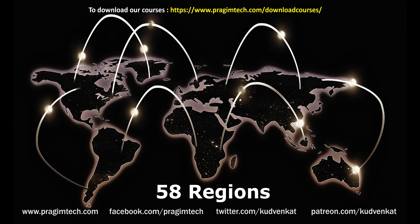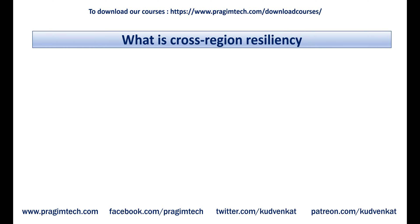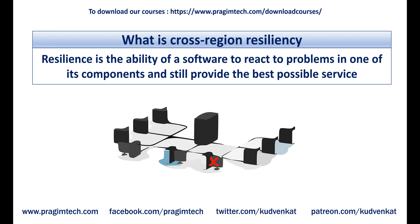You have the flexibility to deploy your applications and data to any Azure region you want. You can even deploy across multiple regions to deliver cross-region resiliency. In general, resilience is the ability of software to react to problems in one of its components and still provide the best possible service. Both your software and the underlying infrastructure must be resilient. If there is a problem, the end user should not know about it — the request must be handled and processed by another region, and the end user should get the same level of service.